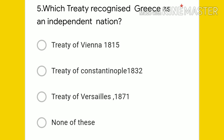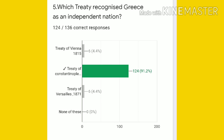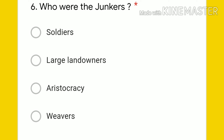Fifth question: which treaty recognized Greece as an independent nation? Options: Treaty of Vienna 1815, Treaty of Constantinople 1832, Treaty of Versailles 1871, or none of these. The answer is Treaty of Constantinople 1832, and 124 students gave the right answer. Six students chose the first and third options.